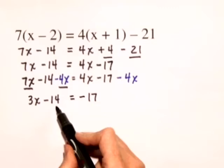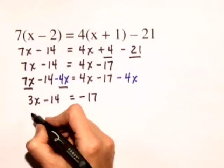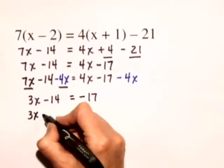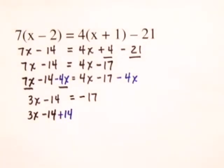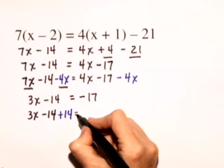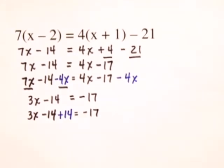Next, we're going to add 14 to both sides of this equation, and we'll have 3x minus 14 plus 14 is equal to negative 17 plus 14.